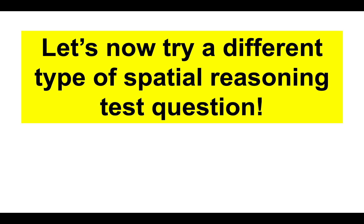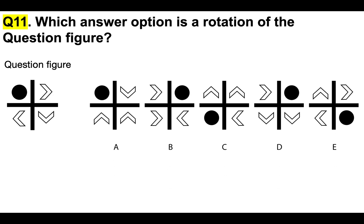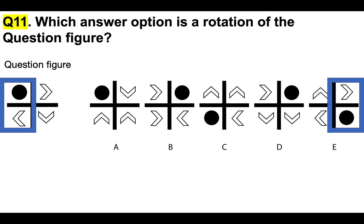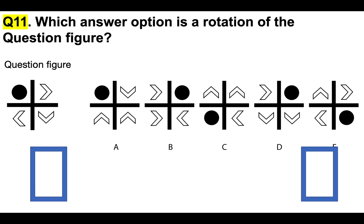Brilliant, well done! Now let's try a different type of spatial reasoning test question. Question 11: which answer option is a rotation of that question figure — A, B, C, D, or E? Instead of looking at the figure as a whole, choose one particular element. I'll choose that left column — it has a black filled circle top left and an arrow pointing to the left at the bottom. I'll then find that sequence in A, B, C, D, or E when rotated. I can see it in E. To confirm, I'll look at the different arrows at the top right and bottom right — that is the same. So the correct answer is E.